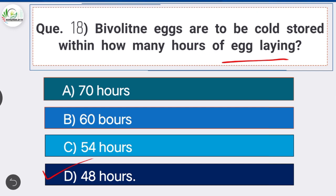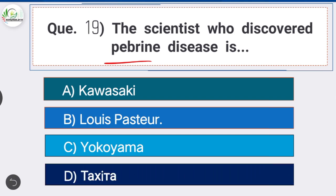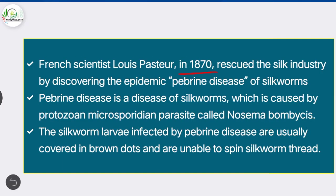Question number nineteen: the scientist who discovered pebrine disease is — option B is the correct answer — Louis Pasteur. French scientist Louis Pasteur in 1870 rescued the silk industry by discovering the epidemic pebrine disease of silkworms. Pebrine is caused by the protozoan microsporidian parasite Nosema bombycis; infected larvae are usually covered in brown dots and are unable to spin silk thread.